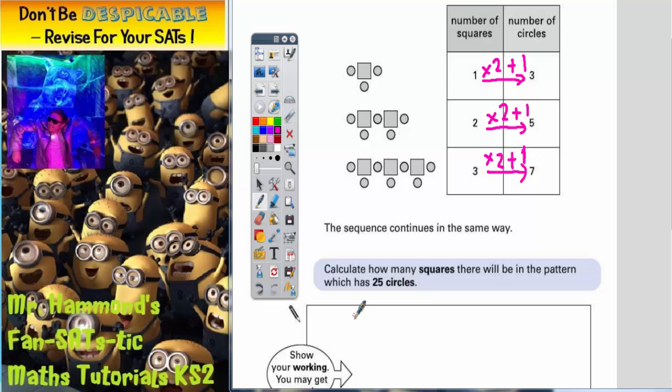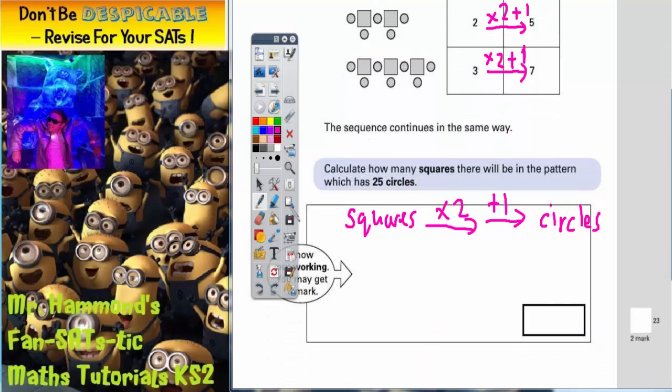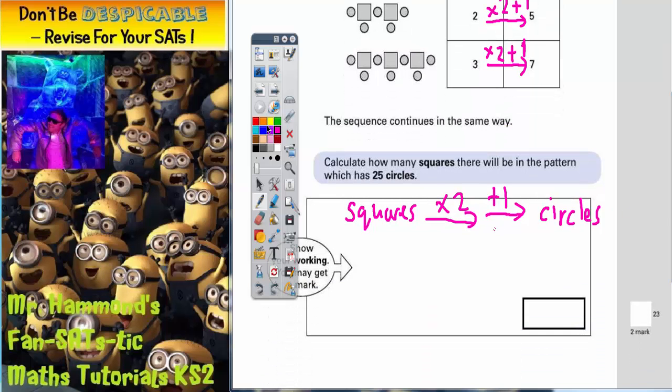And the rule is this: the number of squares doubled and then add on 1 seems to give you the number of circles, and that has worked every time. Now we get told that we've got 25 circles. So what we can't do is put 25 there, because that would be saying 25 squares. We've got 25 circles, so 25 has to go there.